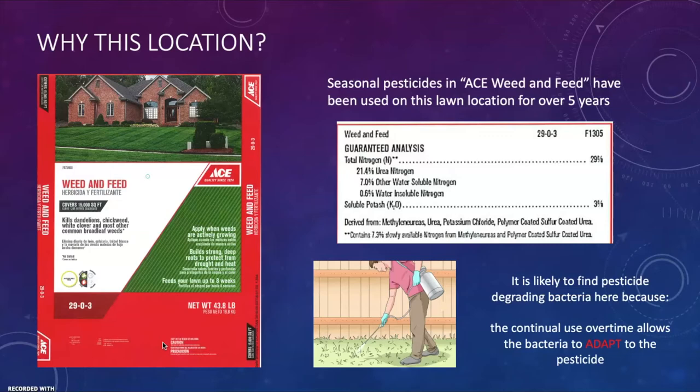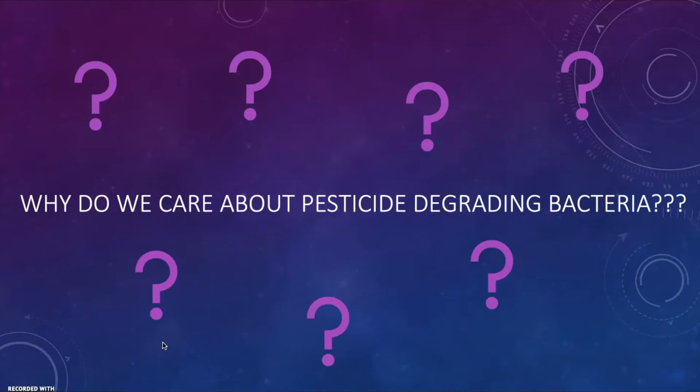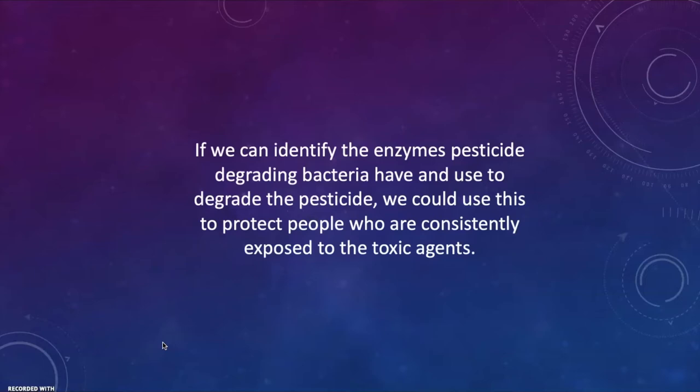So why do we care about pesticide-degrading bacteria? If we can identify the enzymes pesticide-degrading bacteria use to degrade their pesticides, we could use this to protect people who are consistently exposed to toxic agents. For example, farmers are consistently exposed, as well as soldiers in wartime, and it can be really harmful.